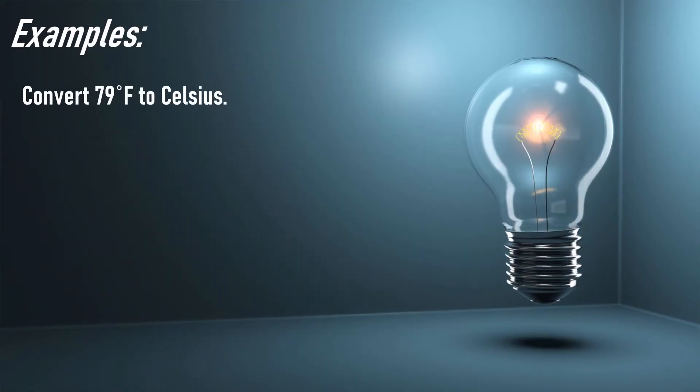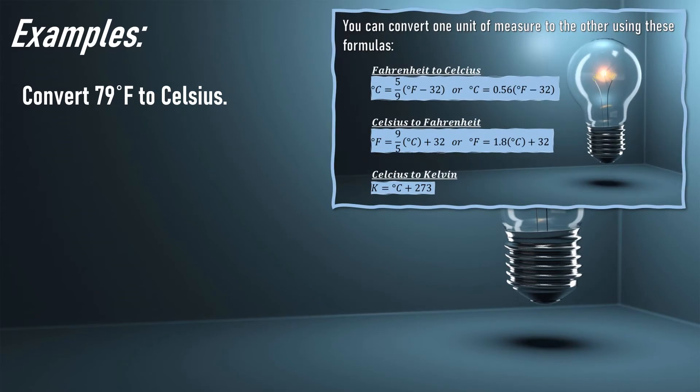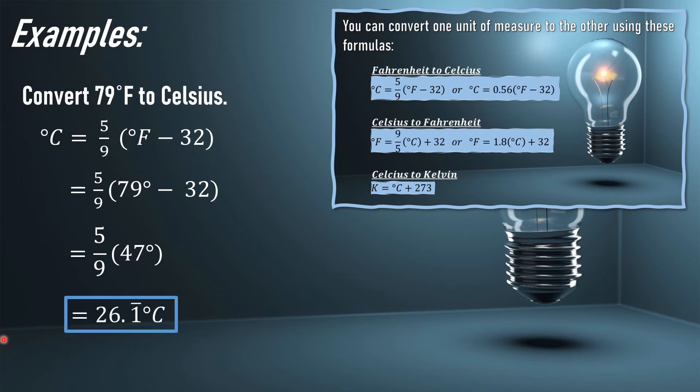Another example: convert 79 degrees Fahrenheit to Celsius. The given is Fahrenheit and we need to convert it to Celsius, so we'll use the first formula with 5 over 9. We have 5/9 × (°F - 32). Let us substitute 79 degrees. Since 79 minus 32 is in parentheses, we solve that first. Bring down 5/9 × 47°. Multiply 5/9 by 47 degrees. Therefore, the final answer is 26.1̄ degrees Celsius.